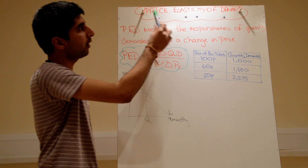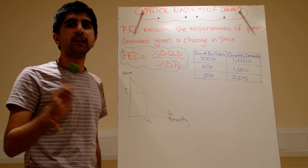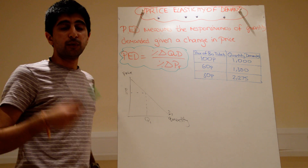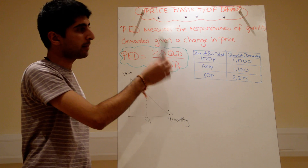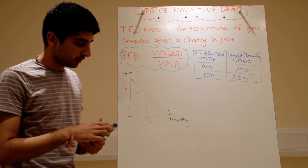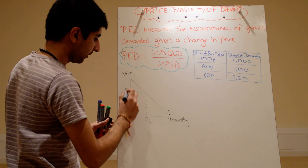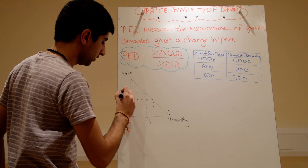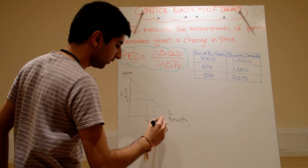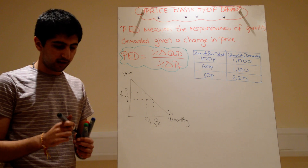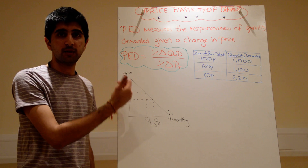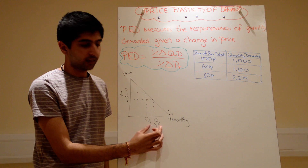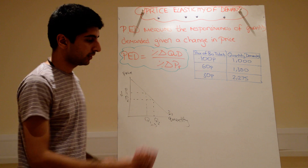And that's what price elasticity of demand tries to measure. Price elasticity of demand measures the responsiveness of quantity demanded given a change in price. So we know that when the price goes down from P1 to P2, quantity demanded increases from Q1 to Q2, and vice versa. When the price goes up, quantity demanded falls. But how much? Give me an actual figure as to how much that quantity changes.